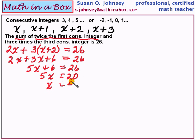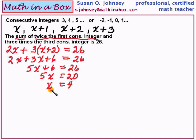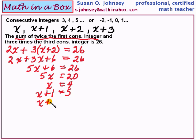I'm going through these steps quickly because this should already be easy for you. If not, you need to go back and study solving equations. Our first consecutive integer is x equals 4. The next one — add 1 — is 5. The third one is x plus 2, which is 6.